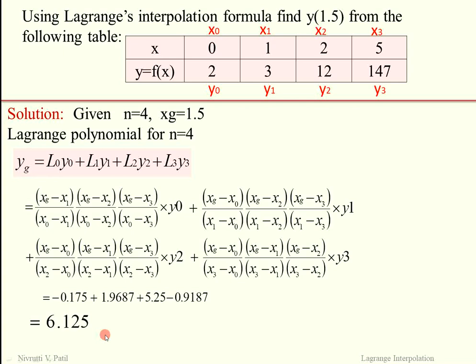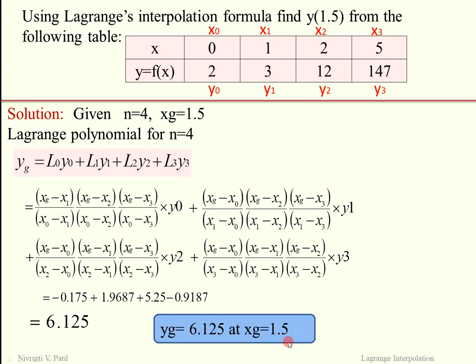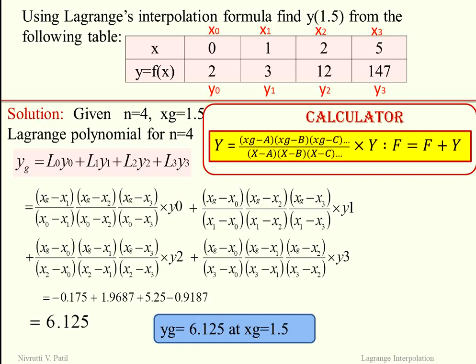So we can finally write YG = 6.125 at XG = 1.5. Now I am going to show you how to use the calculator effectively to get these values within a few seconds. For the calculator, we write the formula as Y = (XG − A)(XG − B)(XG − C) / (X − A)(X − B)(X − C), using three terms since N minus 1 equals 3. If there are more data points, you can extend to XG − D, XG − E, and so on.